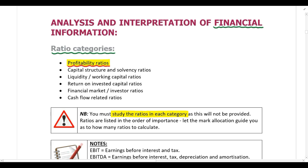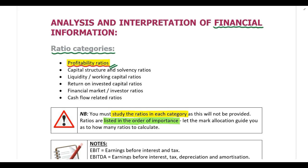Please make sure when you are studying the ratios, you know which ratios fall in each category. Also note that all ratios are listed in the order of importance. So if you are required to calculate the profitability ratios, you should start at the top and work your way down. The first ratio is the most important ratio and the last ratio is the least important ratio. Then how do you know how many ratios you should calculate?